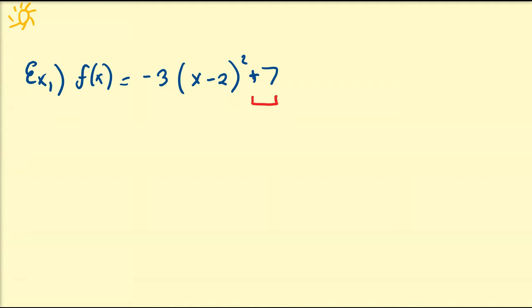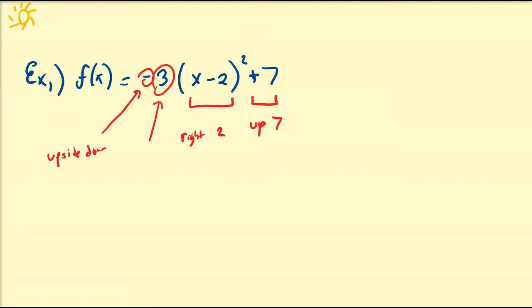The plus 7 is going to be an up-7 transformation. The x minus 2 is definitely going to be a right-2 transformation. The negative sign implies that the function is going to be flipped upside down, and the 3 scaling factor means it's going to be compressed towards the y-axis.